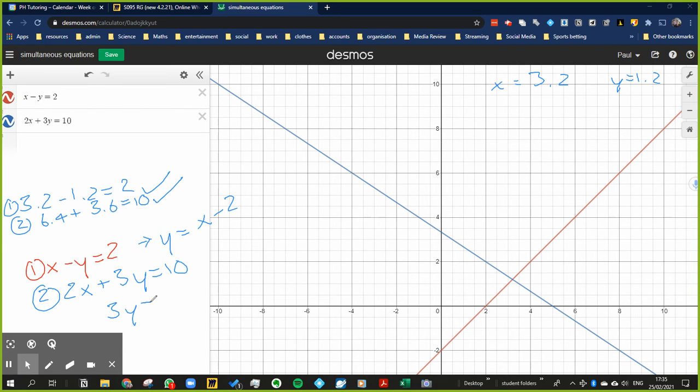To plot this one, I would rearrange it again. So I'd end up first of all going to 3y is equal to negative 2x plus 10, rather than saying 10 minus 2x, because I want to show where the gradient is. So it's negative 2 at the moment. Well, it's not negative 2, but it looks like it's negative 2 currently. I then need to divide both sides by 3, so the gradient is going to be negative 2 thirds.